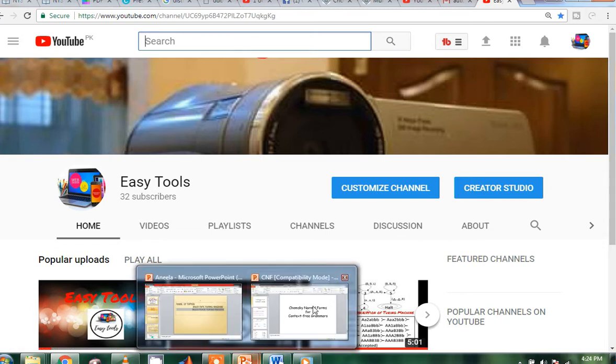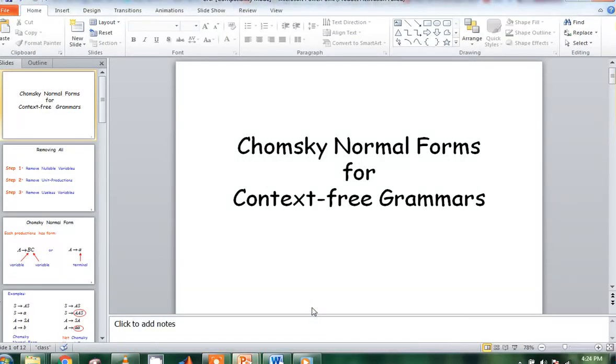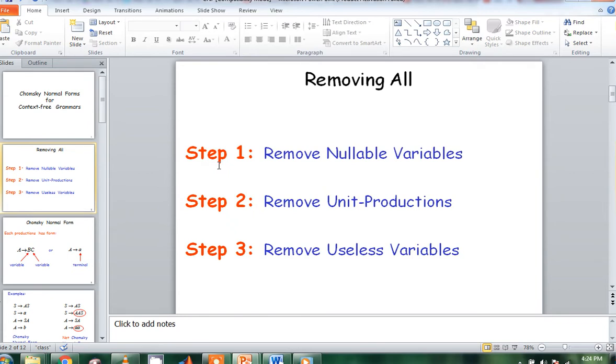We will talk about Chomsky Normal Form for context-free grammar. Basically, we have to remove these things: nullable, variable, unit production, and useless variables.